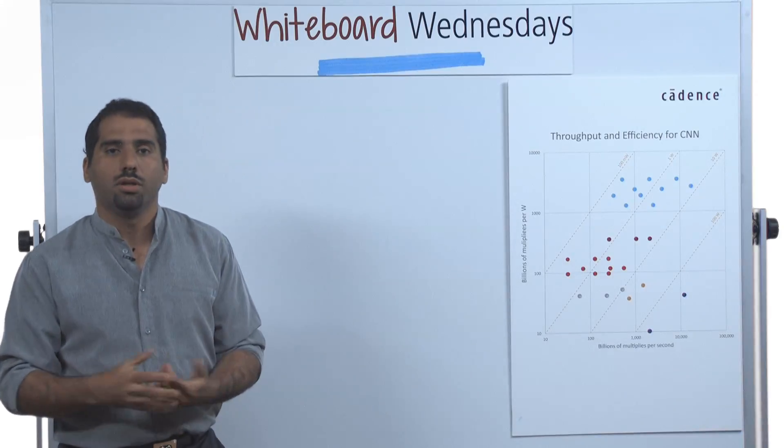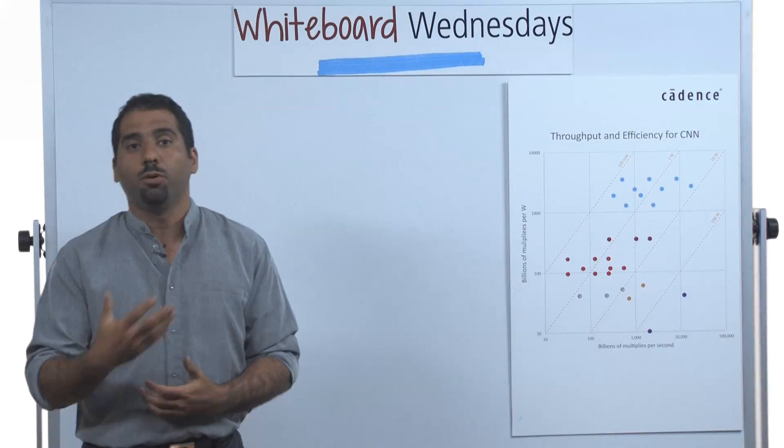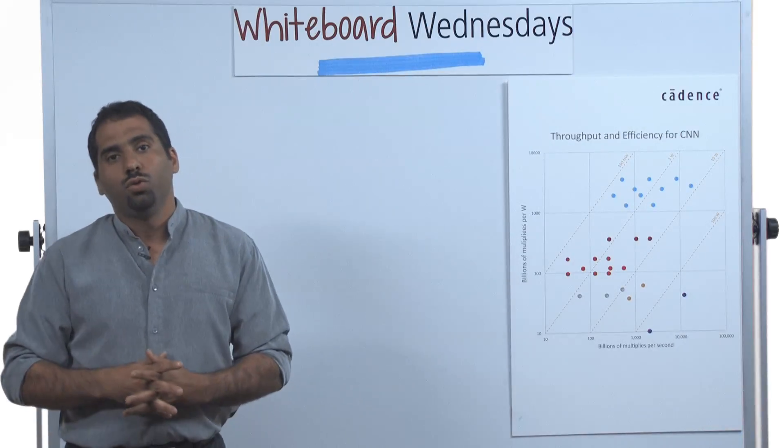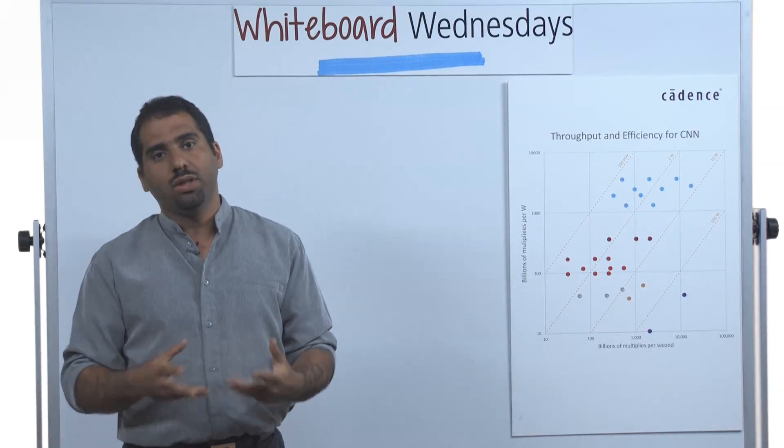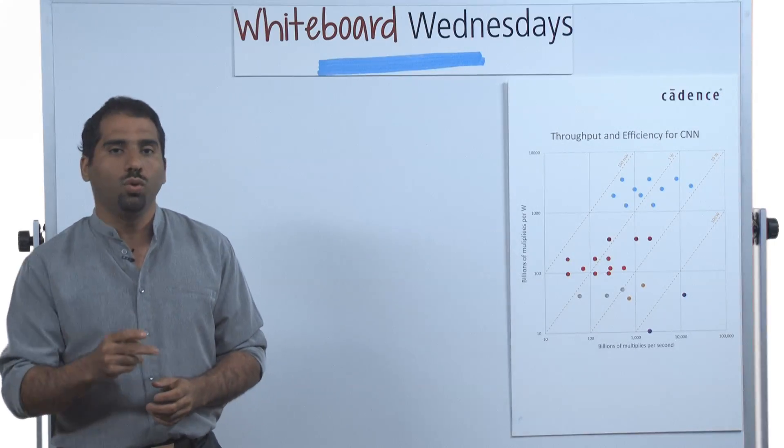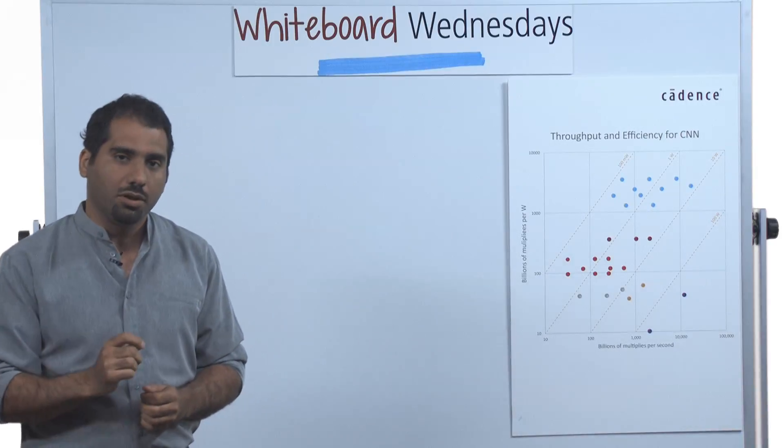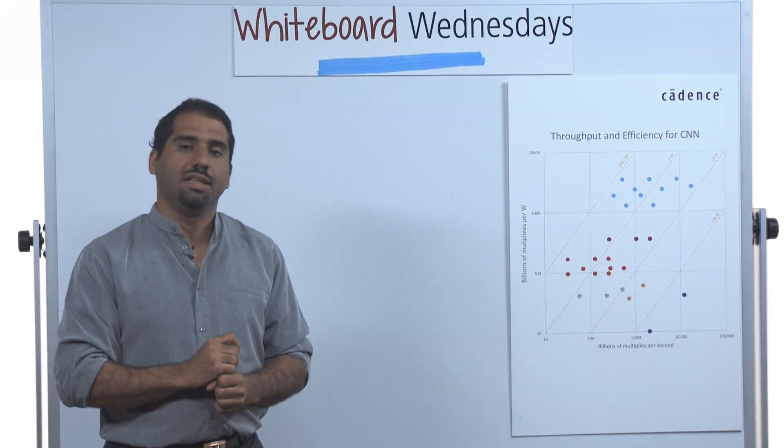So how are we going to solve this problem? As Cadence, we have a responsibility and opportunity to help the semiconductor industry to bring to the consumer what they need: faster, cheaper, and better. So there are two aspects that have to happen in order for deep learning to come to our daily life.